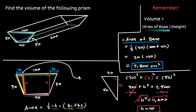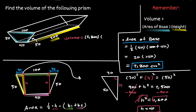Now that we have found the area of the base, we need to think about the height of this figure. The height is how many times the figure gets stacked, which in this case is 200 centimeters. Putting it all together, the volume is the area of the base — which is 2,800 — times the height — which is 200 — giving us 560,000.